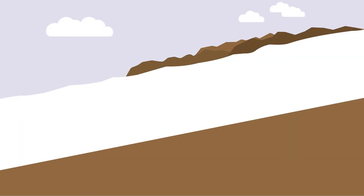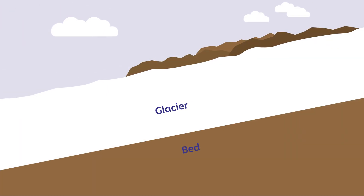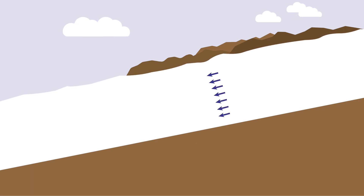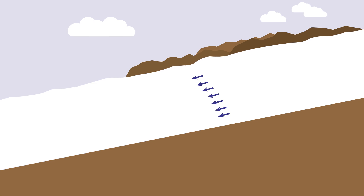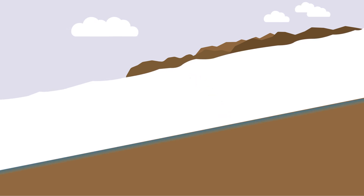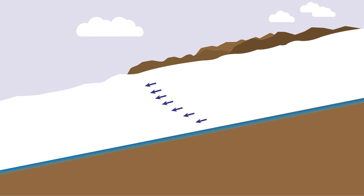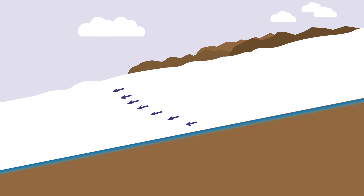Zooming into a cross-section view of a glacier, we can see how much influence the conditions at the base of the ice have on the glacier's flow. Where temperatures are freezing, most motion is due to the slow, batter-like flow of the ice deforming. But where temperatures allow for liquid water at the base, the lubricated contact between ice and ground allows the glacier to slide as well, greatly increasing its velocity.